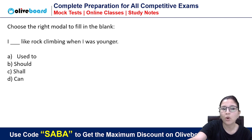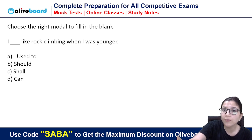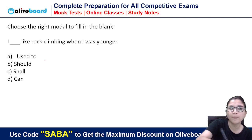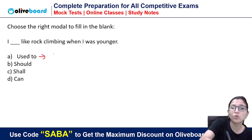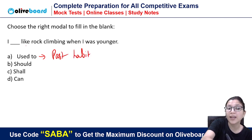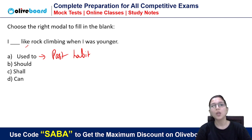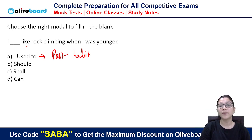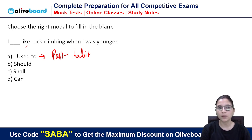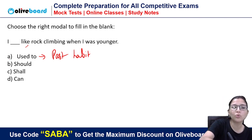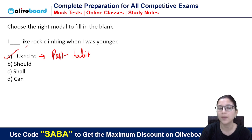Next: 'I dance like rock climbing when I was younger.' Whenever we talk about past habits, we use 'used to.' The ability is not what's being expressed here — it is a past habit. So the correct sentence is: 'I used to like rock climbing when I was younger.'